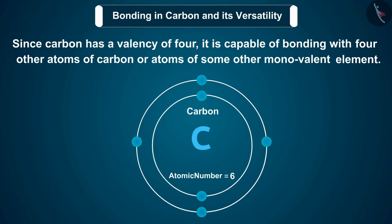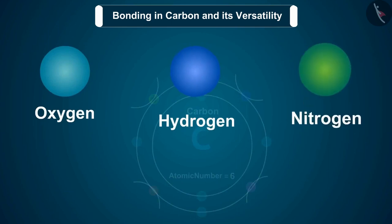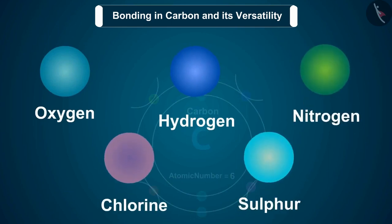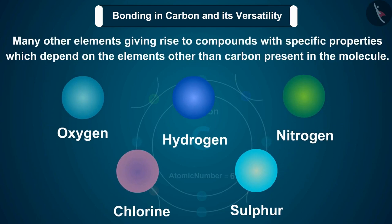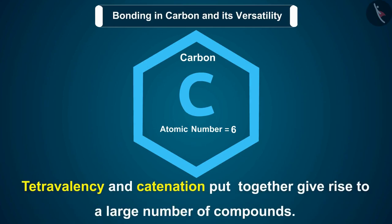Since carbon has a valency of 4, it is capable of bonding with 4 other atoms of carbon or atoms of some other monovalent element. Compounds of carbon are formed with oxygen, hydrogen, nitrogen, sulfur, chlorine, and many other elements, giving rise to compounds with specific properties which depend on the elements other than carbon present in the molecule. The two characteristic features of carbon — tetravalency and catenation — together give rise to a large number of compounds.